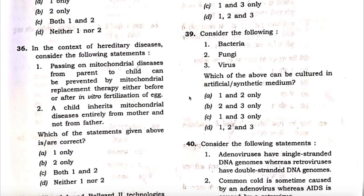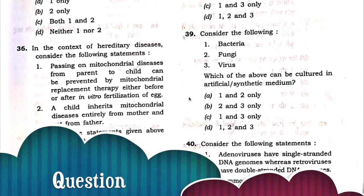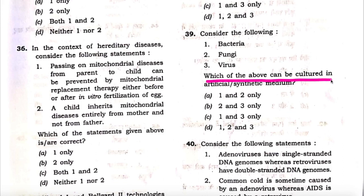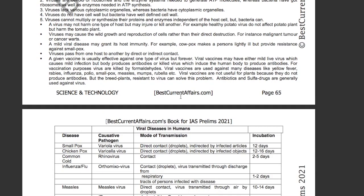The next question: consider the following — bacteria, fungus, virus. Which of the above can be cultured in an artificial or synthetic medium? The correct answer is one and two only — virus cannot be cultured artificially. So if you remove virus, you are left with only option A. Now see the explanation in our science booklet for IAS Prelims 2021, page number 65, which has information about viruses.